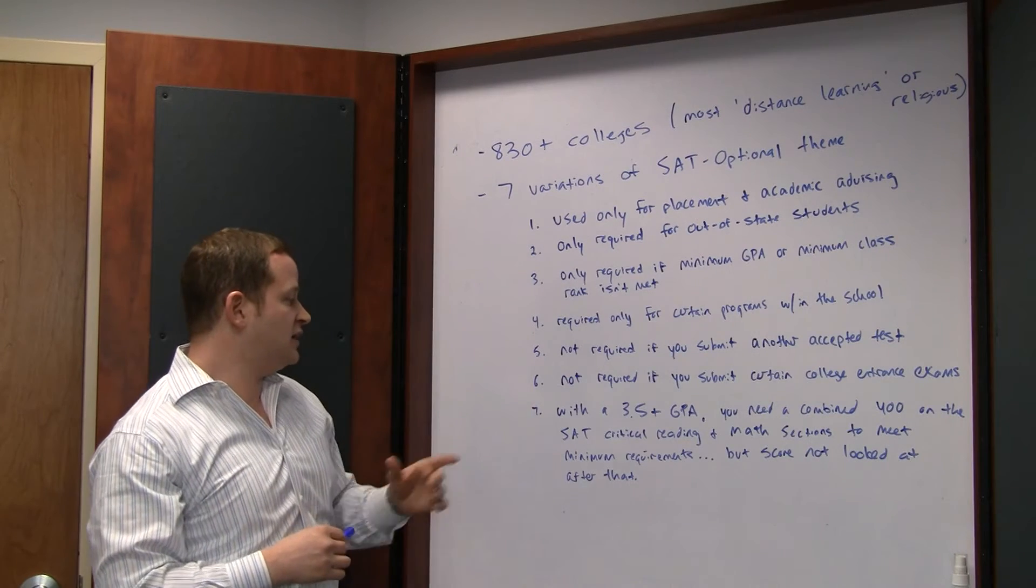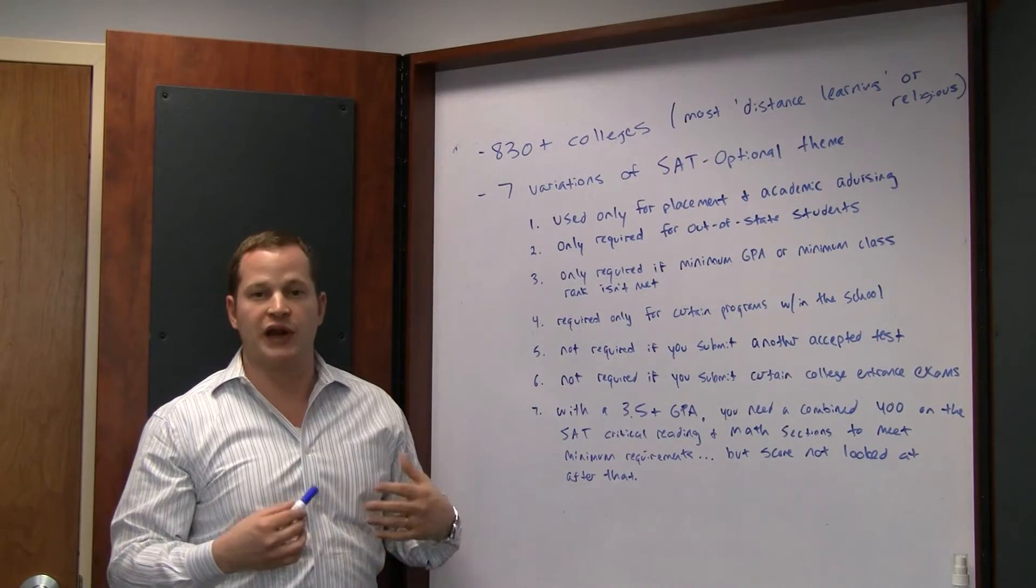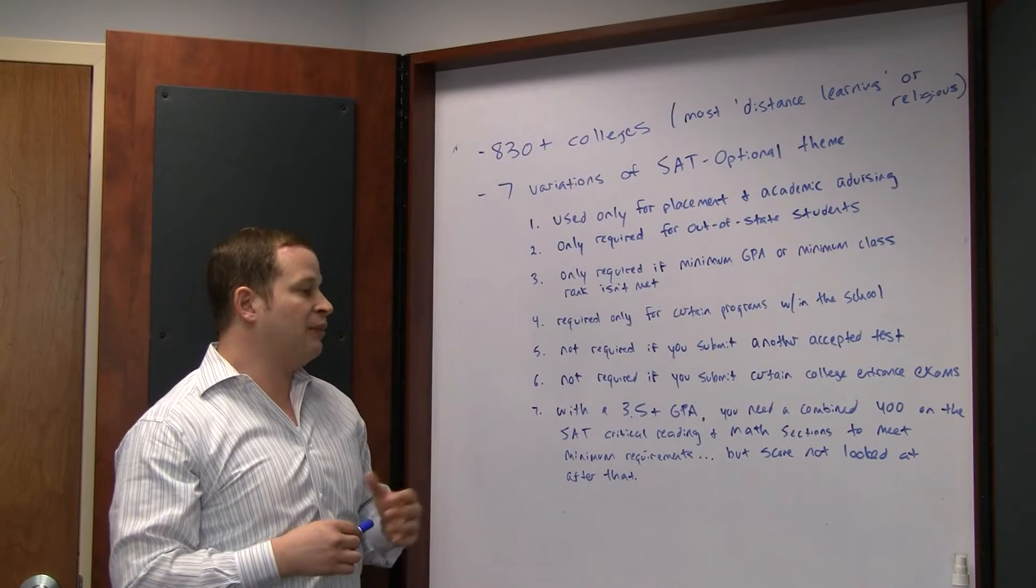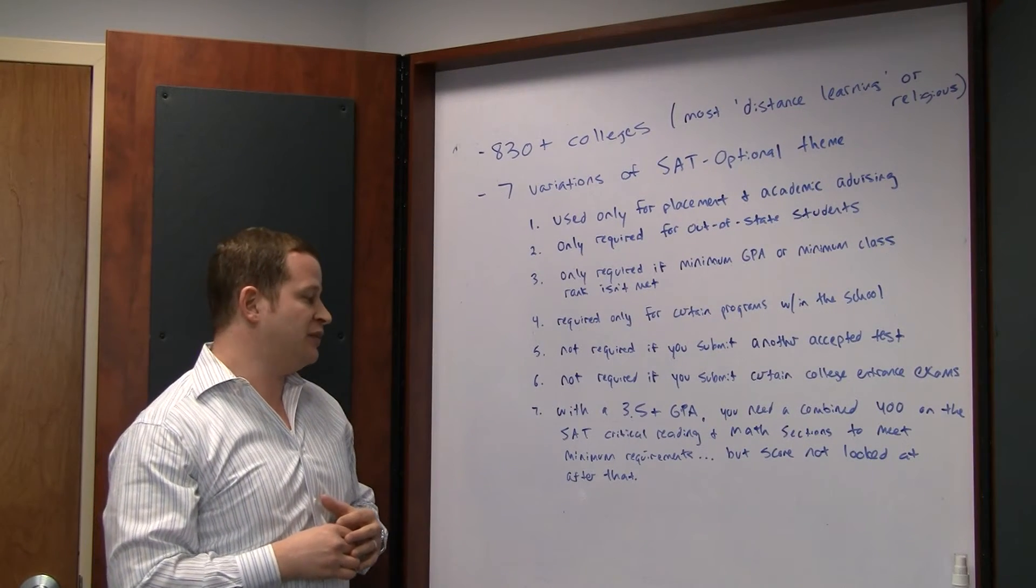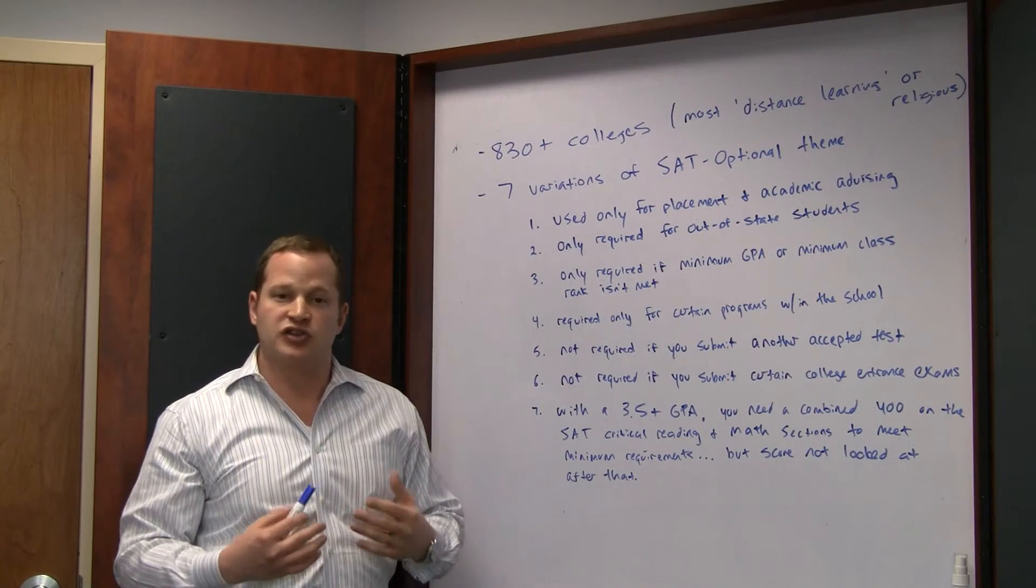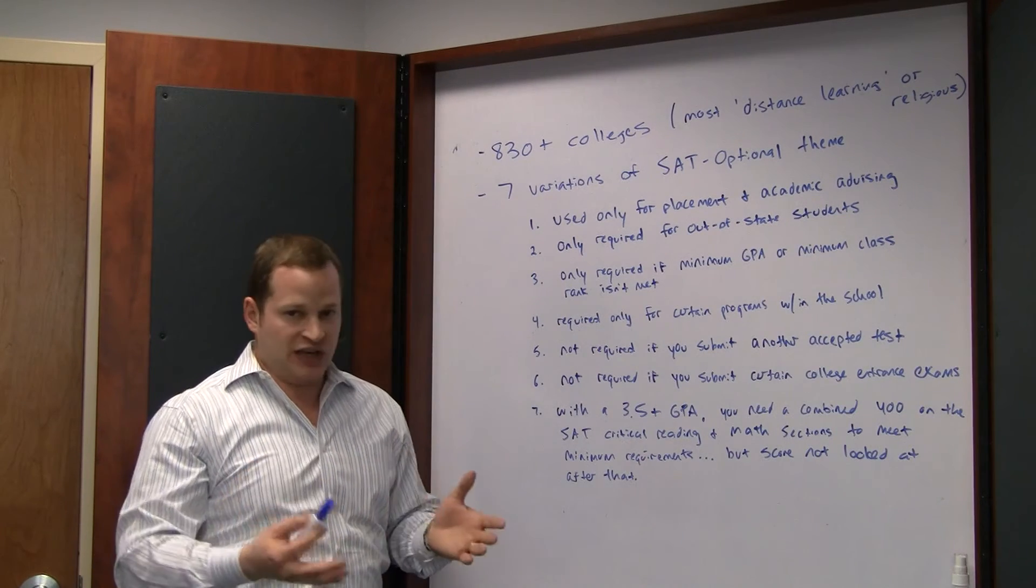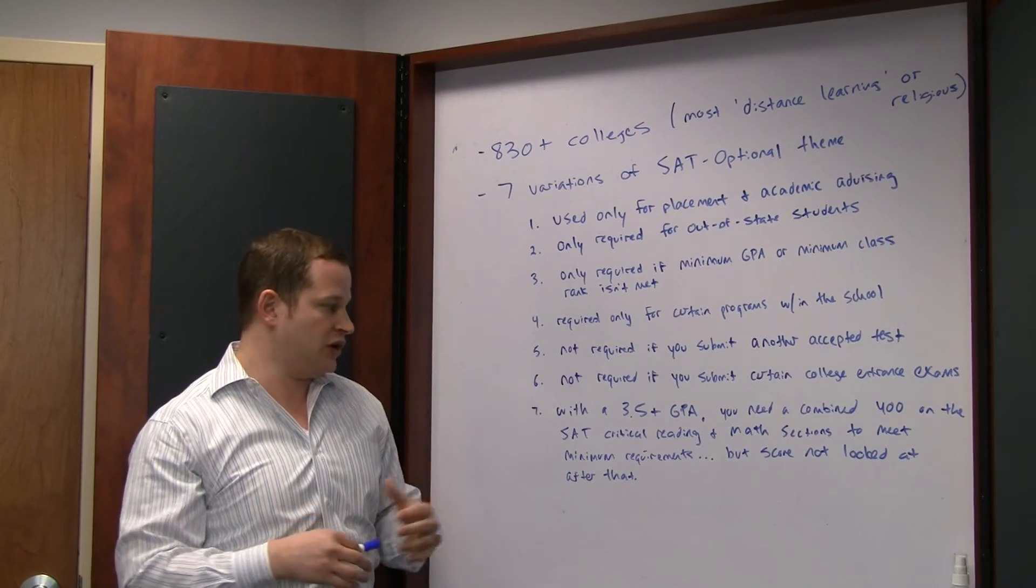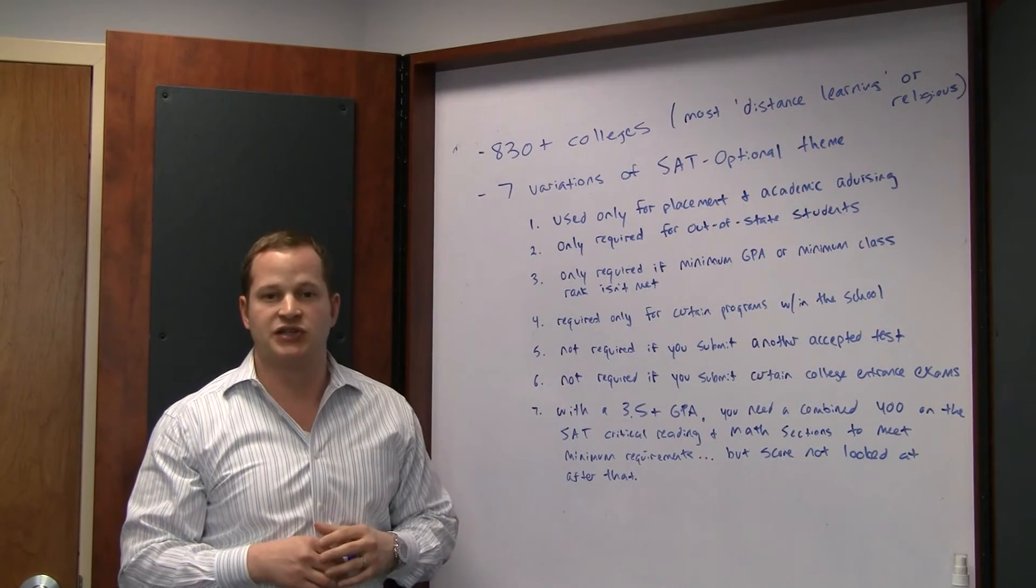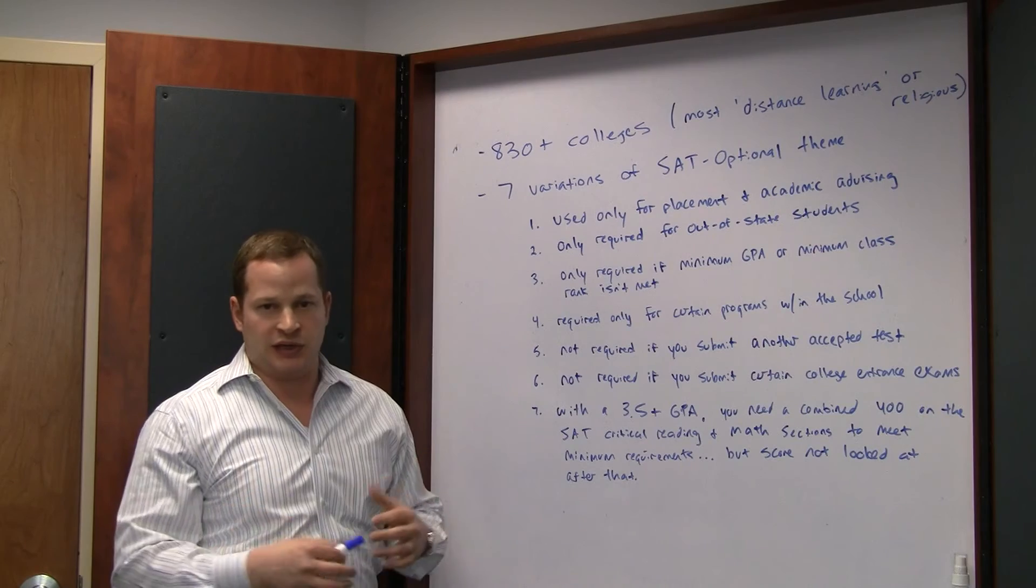And number seven is that with a 3.5 or greater GPA, you need a combined 400 on the SAT critical reading and math sections to meet minimum requirements, but your score is not looked at as long as you hit that 400 point score. Anything above that doesn't really get taken into consideration.